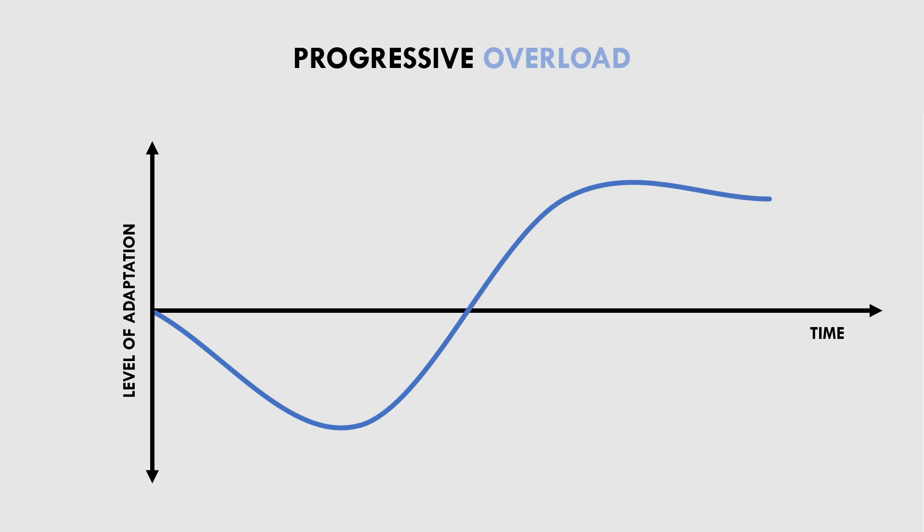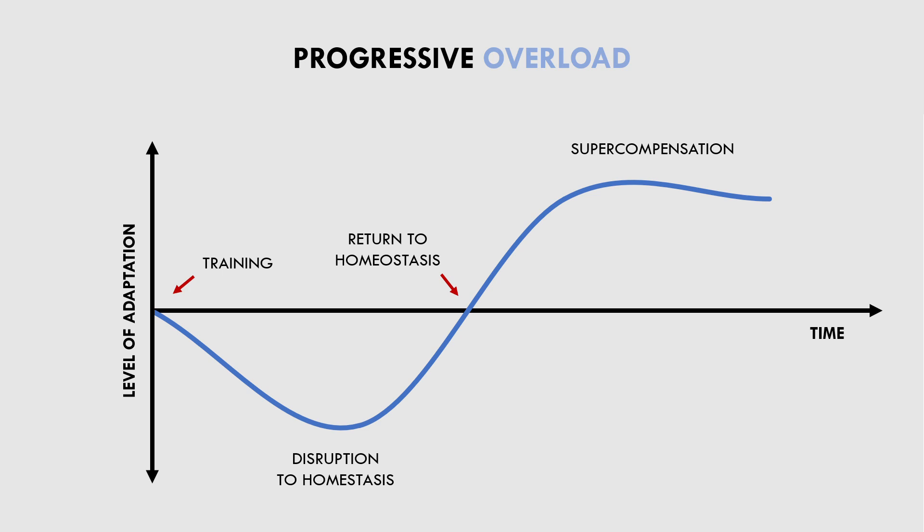First, we train in some capacity to provide a stimulus geared towards improving some sort of adaptation. This stresses the relevant tissues and systems, which causes a disruption to homeostasis — something that interrupts the state of balance our body is currently in. As a result, the body aims to get back to homeostasis by repairing the damage caused by the disruption. Furthermore, provided the stimulus was sufficiently disruptive, there will also be a supercompensation effect, where the body adapts to a greater capacity than the previous baseline level.